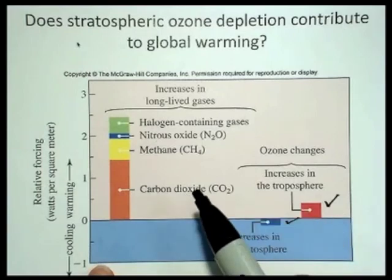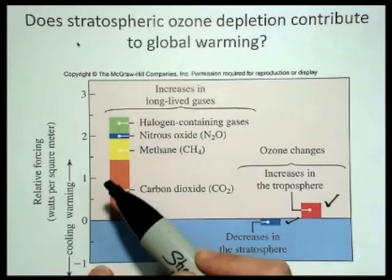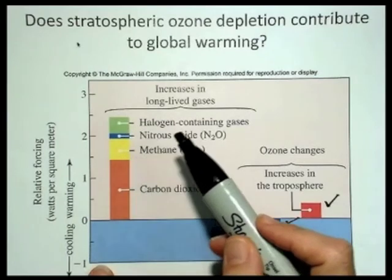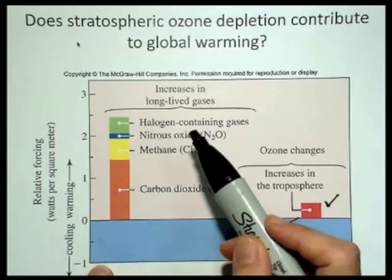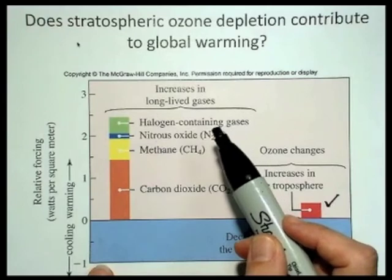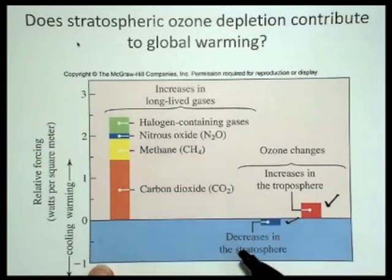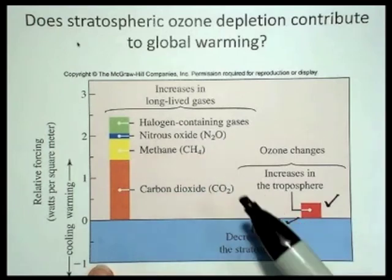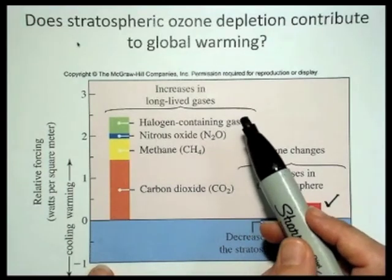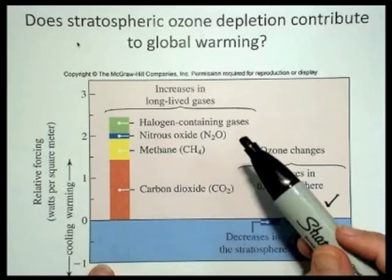That's a completely different factor than all of these other gases which contribute to global warming. The biggest contributor is carbon dioxide, followed by methane, nitrous oxide, and then the halogen-containing gases. The halogen-containing gases — those are the CFCs — the gases put into the atmosphere by aerosol cans and refrigerants. They affect the stratospheric ozone because they break down ozone when they themselves break down and produce chlorine free radicals. But they also absorb infrared radiation, so they have more of a warming effect on the atmosphere.